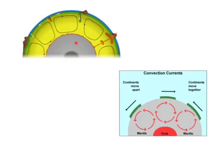The very hot core heats up the mantle above it, causing it to rise. As it rises towards the surface, it has nowhere else to go, so it travels along the surface until it cools and sinks back down towards the core. These circular movements, or convection currents, are able to drag the tectonic plates either apart from each other or towards each other. When they are pulled apart, this allows magma to rise up through the surface as volcanoes, and a new crust is made.